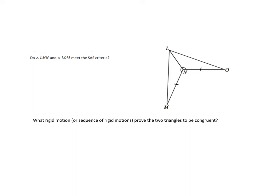This first question asks: do triangles LMN and LOM meet the side-angle-side congruent criteria? We already see that we have a set of congruent sides, and it's given that we have a set of congruent angles, so we have a side-angle situation right now.